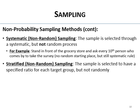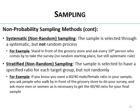There's also stratified non-random sampling. This is when the sample is selected to have some specified ratio for each target group, but not randomly. For example, you want a 60/40 female-to-male ratio in your sample — you ask people in front of the grocery store and ask more men or women as needed until you reach that 60/40 ratio. But you're not turning people away — that's how it differs from quota sampling.